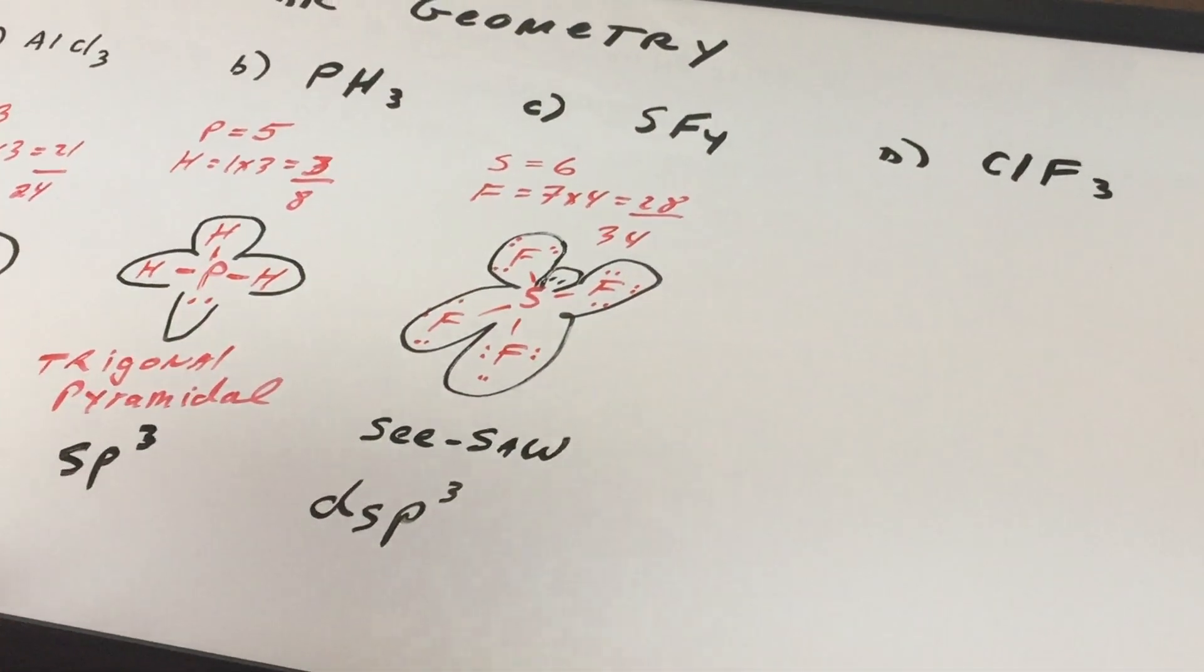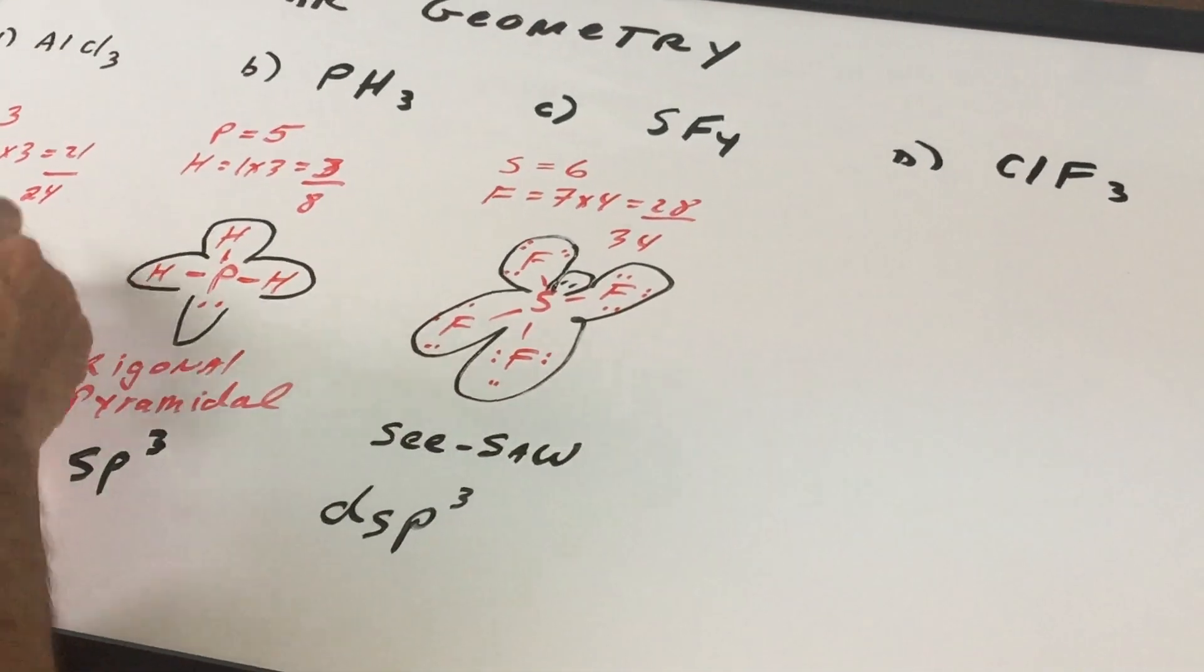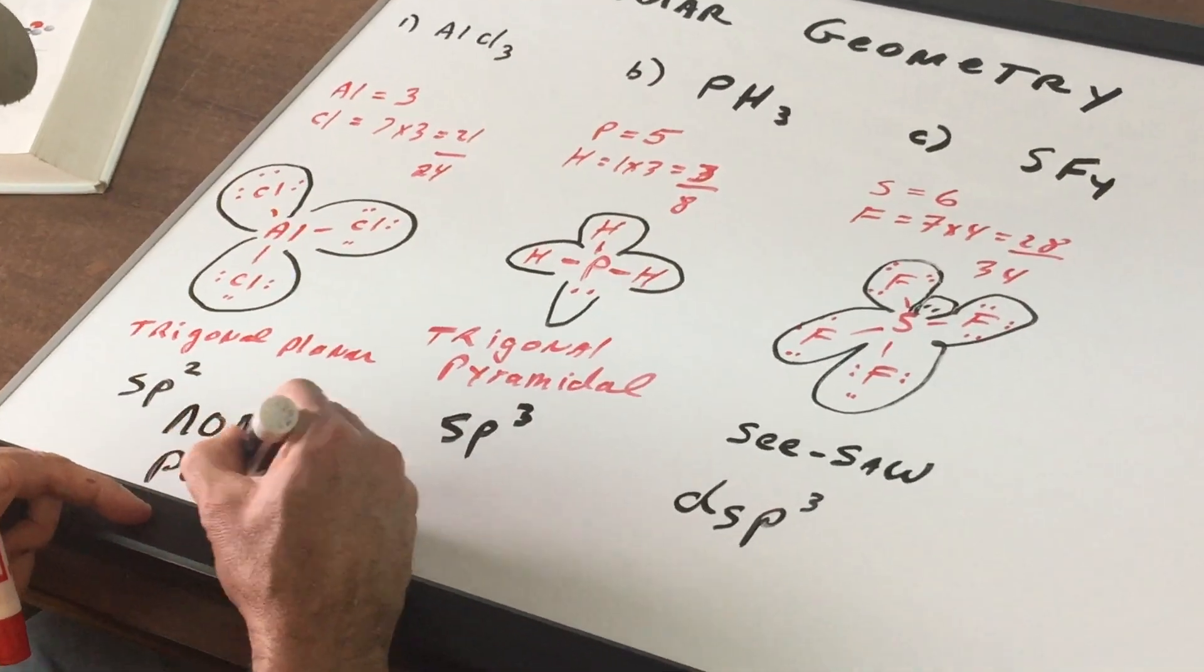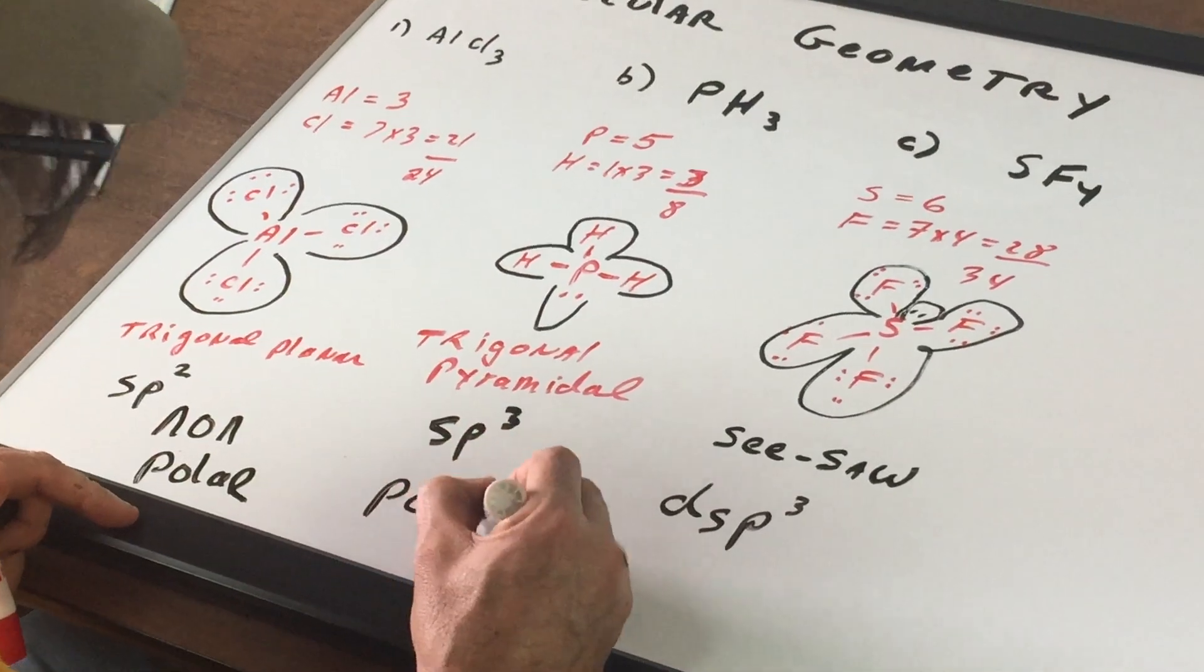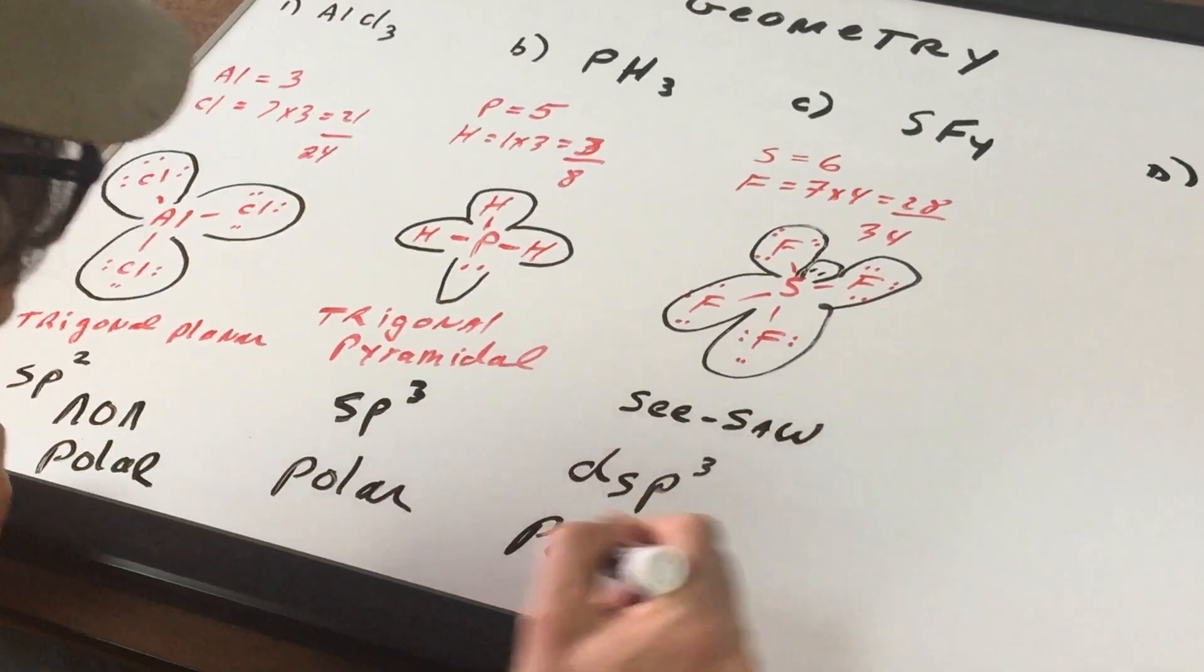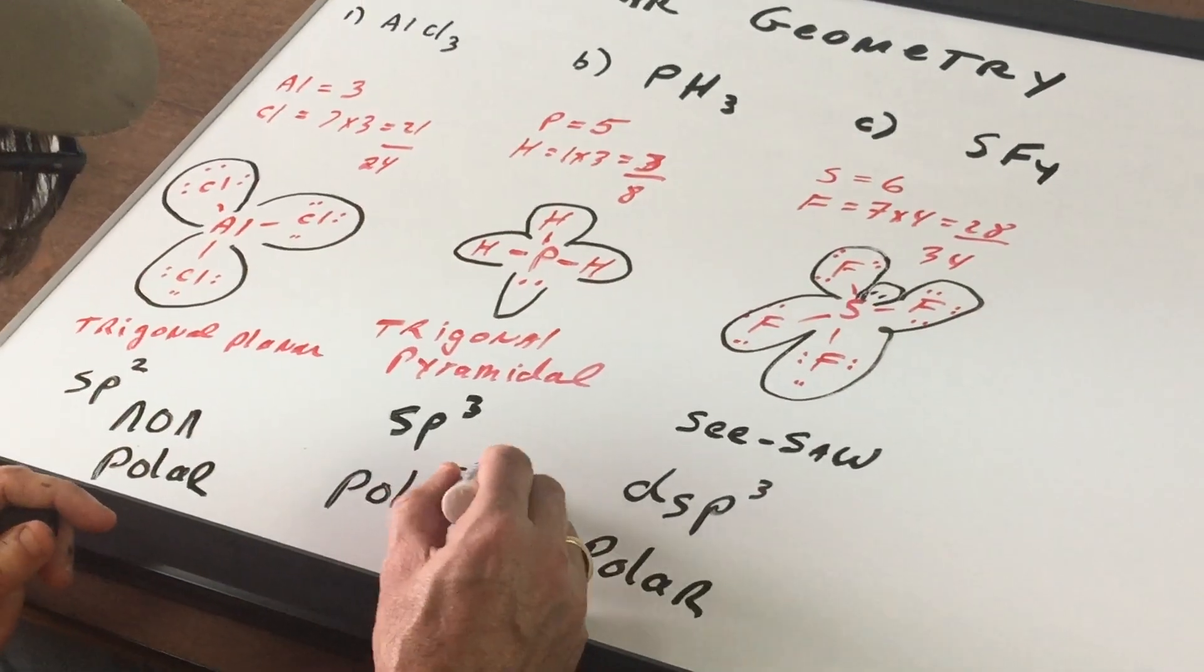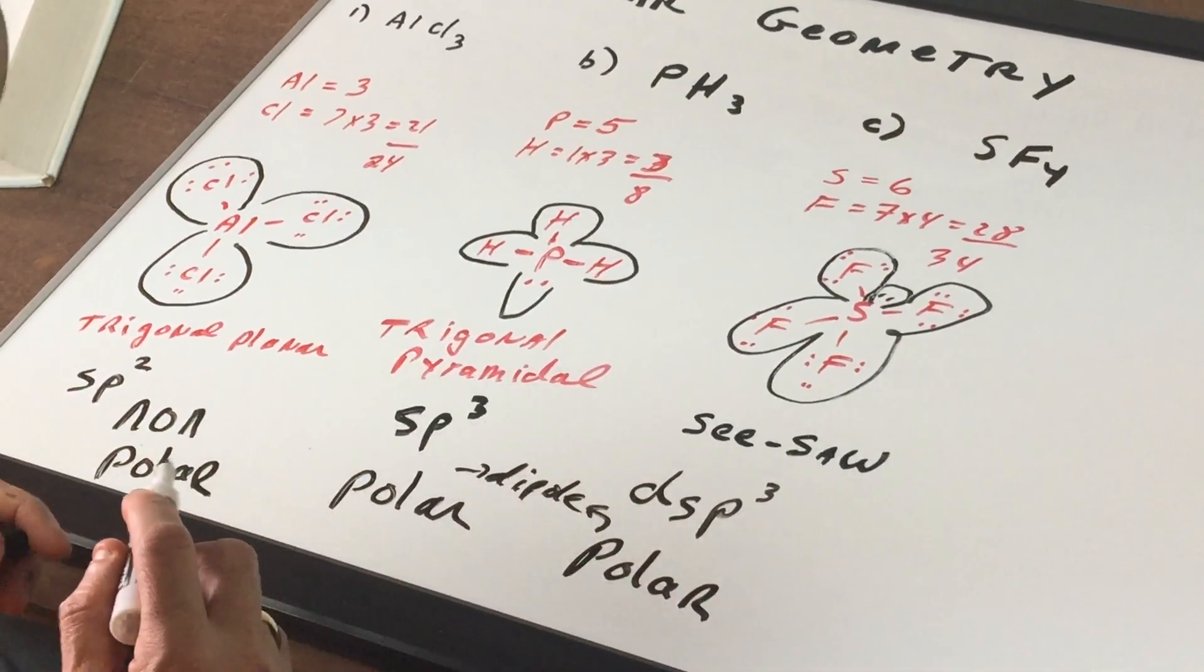Now, going back for a second, all of these have equal sharing electrons here. So this molecule would be what? Nonpolar. This has a pair of dots. So this would be polar. This has an extra pair of dots. And this would be polar. So remember, all polar molecules contain a what? Dipole. So these guys contain dipoles.